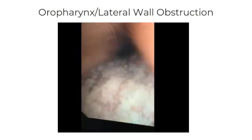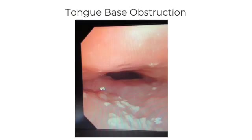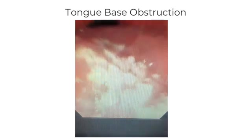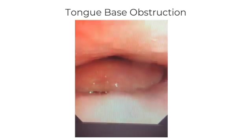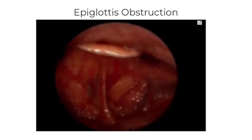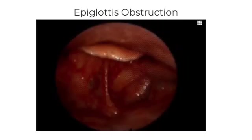For tongue base obstruction, at a similar level as the lateral wall visualization, you can see the tongue base falling back and almost touching the posterior pharyngeal wall, even pushing the epiglottis back with it. This is distinguishable from pure epiglottis obstruction, where the tongue base is well out of the way but the epiglottis is just getting sucked back — you can even see the vibration along with the snoring.